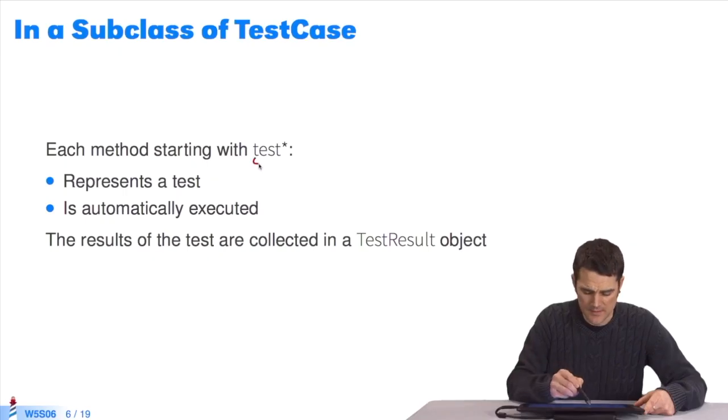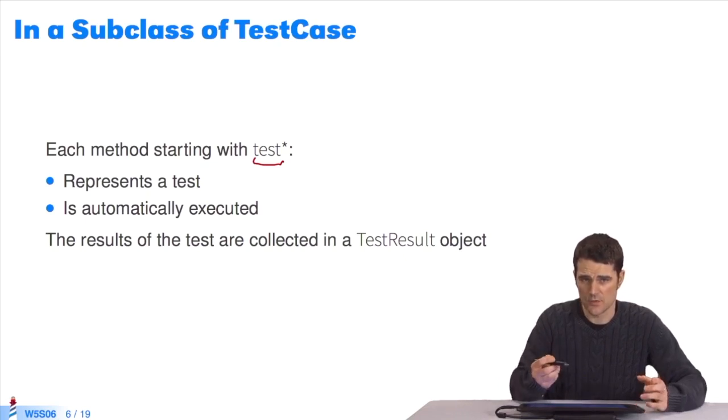All the methods that begin with the string Test represent a test, and will be automatically executed by the TestRunner tool. All the executions of the Test methods produce a result. All these results are collected within a class instance object, TestResult.